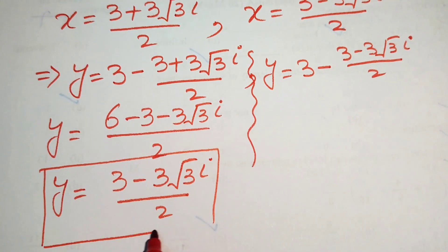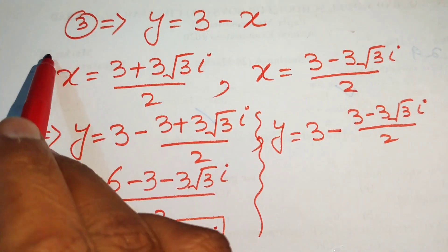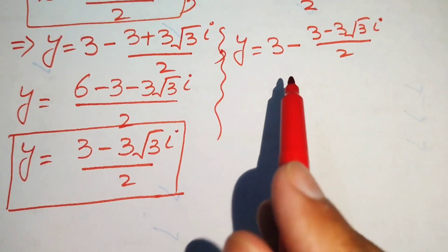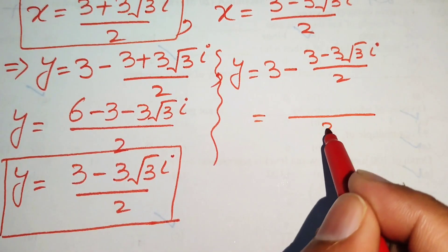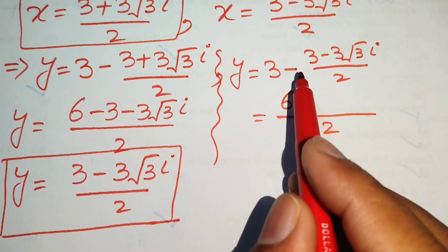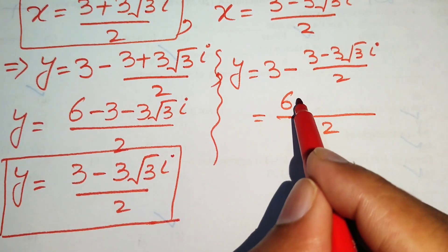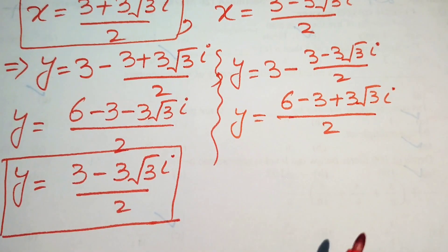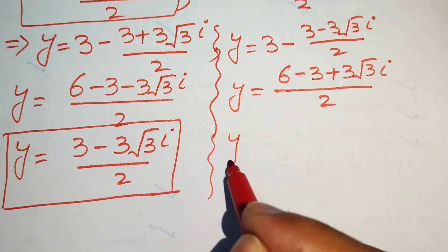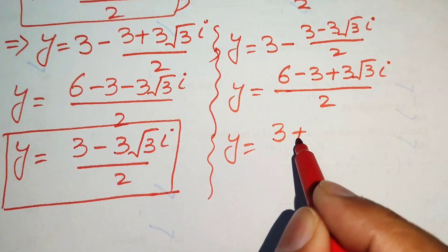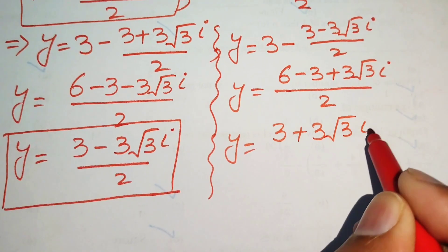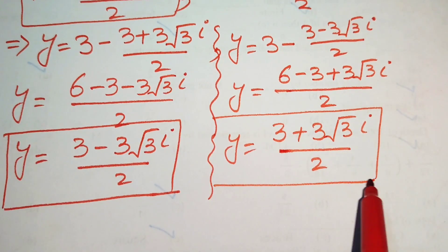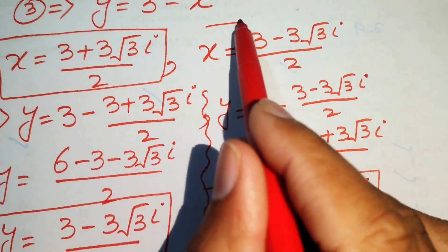This is the value of y corresponding to the first value of x. For the second case, taking LCM of 2 and distributing the minus sign gives minus 3 plus 3 root 3 iota. So y equals (6 minus 3 plus 3 root 3 iota) divided by 2, giving y equals (3 plus 3 root 3 iota) divided by 2.